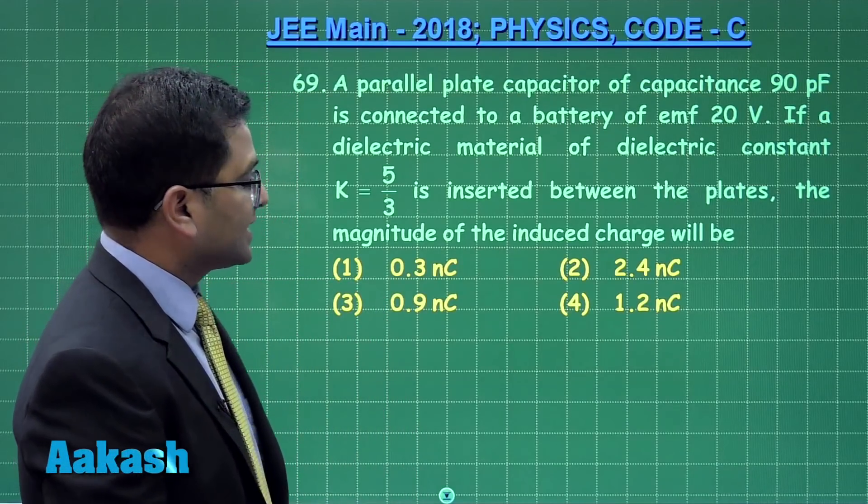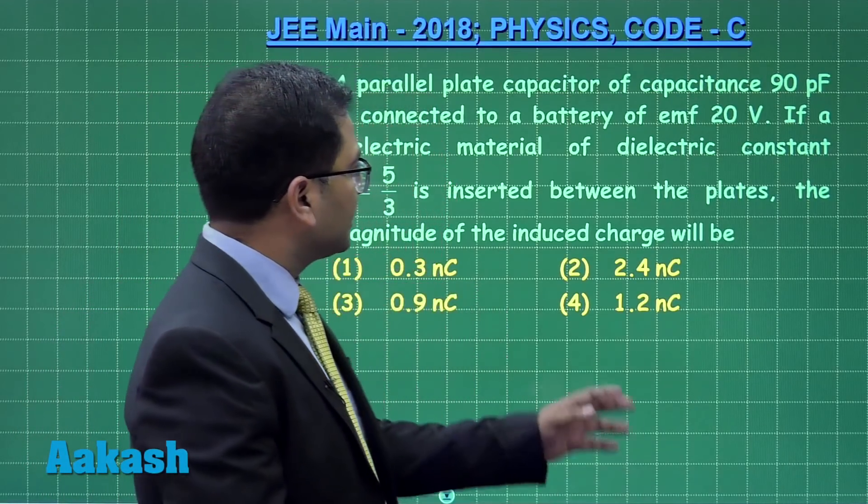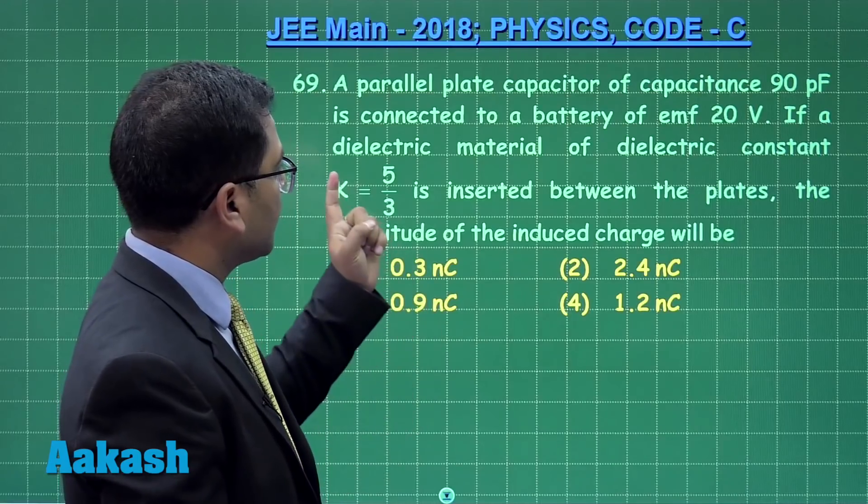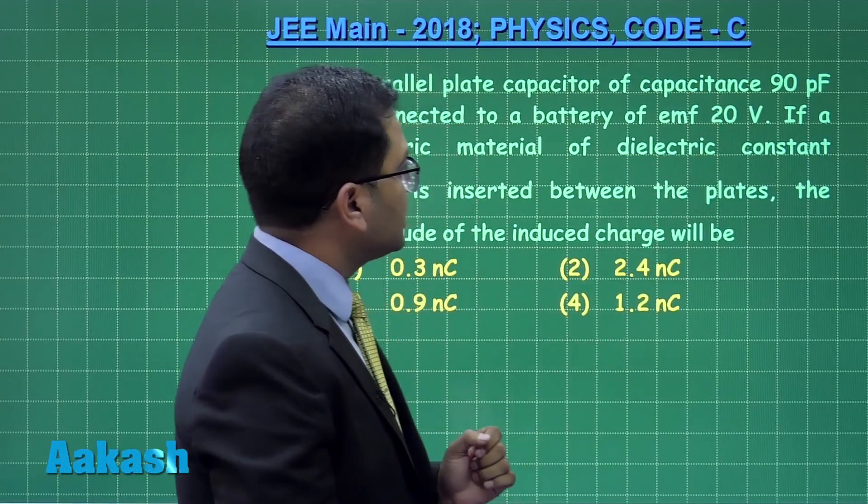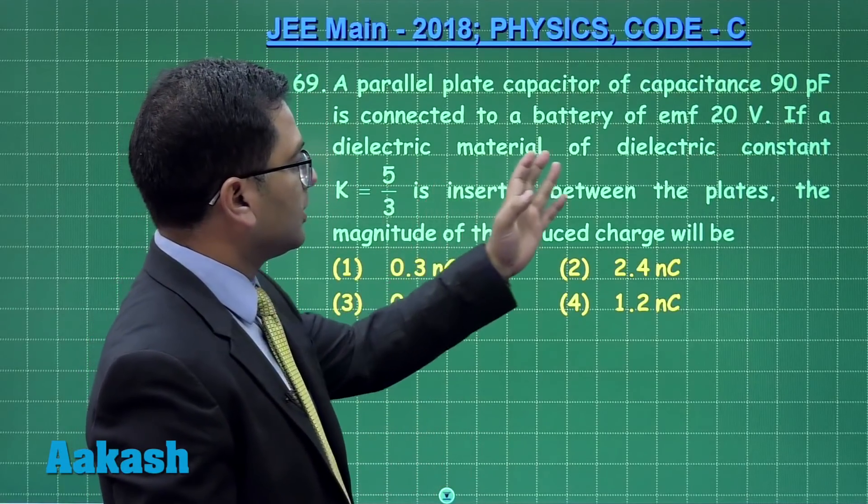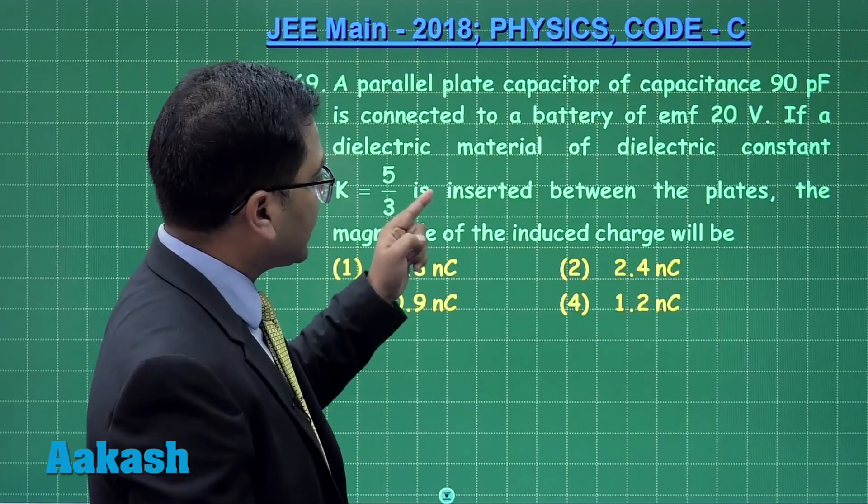Question number 69, another question from electrostatics. This is a straightforward question from capacitors. A parallel plate capacitor of capacitance 90 picofarad is connected to a battery of 20 volt EMF and a dielectric has been inserted.